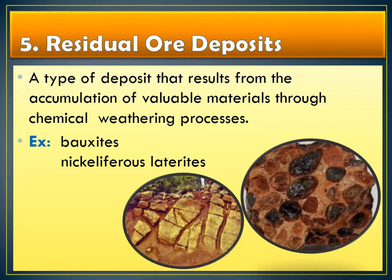Another is the nickeliferous laterites, also known as nickel laterites. Originally, these are called olivine-rich ultramafic rocks such as dunite and peridotite. However, because of weathering and leaching, the rocks dissolve common elements, and the materials left in the original rock include nickel, magnesium, and iron oxide. Mixed with soil, they now form the nickeliferous laterites.